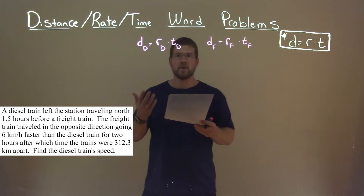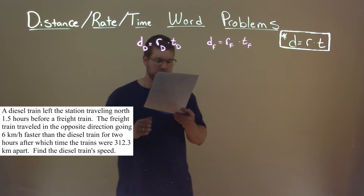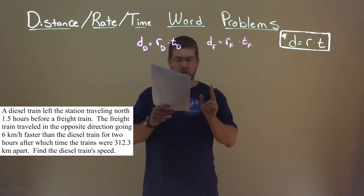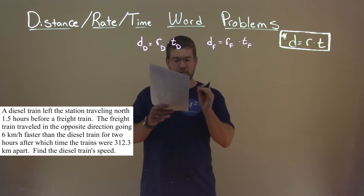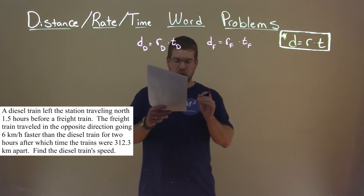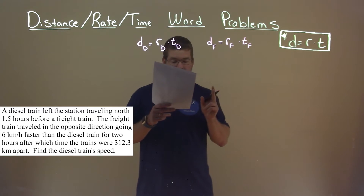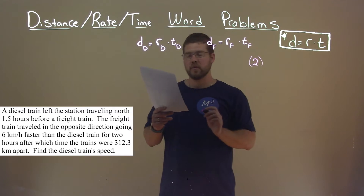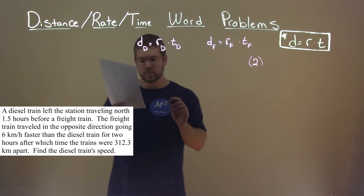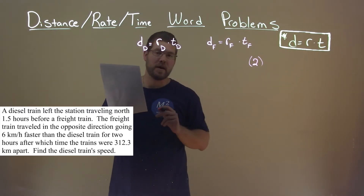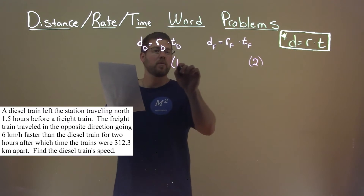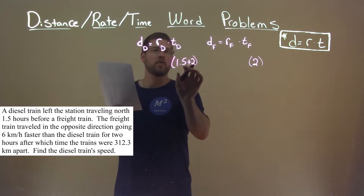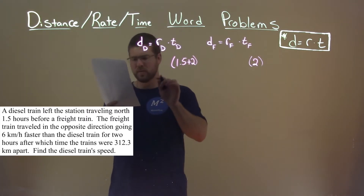So let's plug in what we know and what we can deduce. The diesel train left the station traveling north 1.5 hours before the freight train. The freight train was traveling the opposite direction for two hours, so the time of the freight train is just two hours. For the time of the diesel train, it left 1.5 hours beforehand, so it's 1.5 plus the two hours to get the overall time the diesel train was out there.